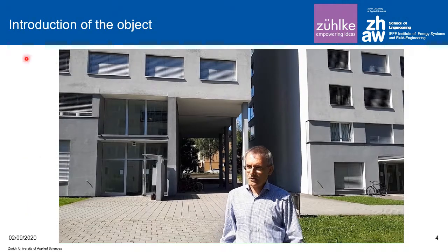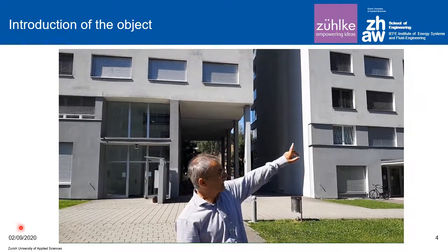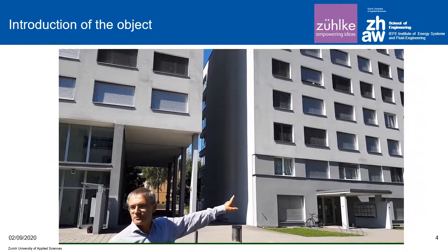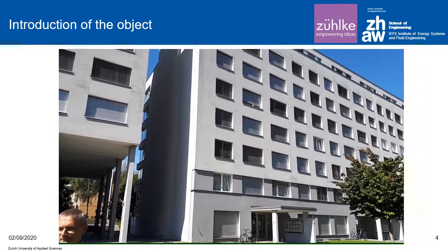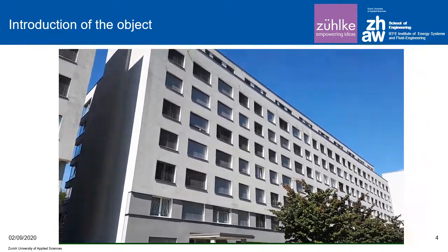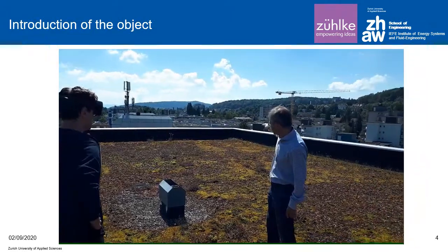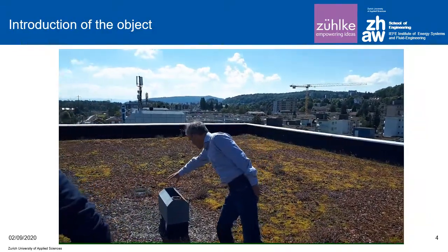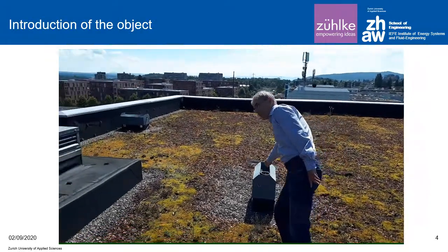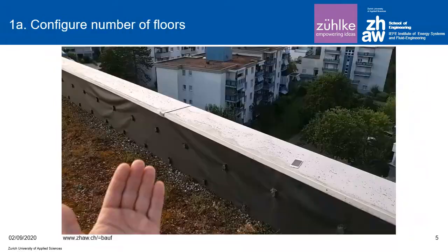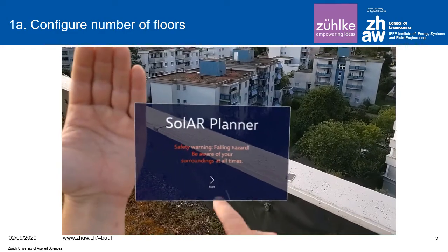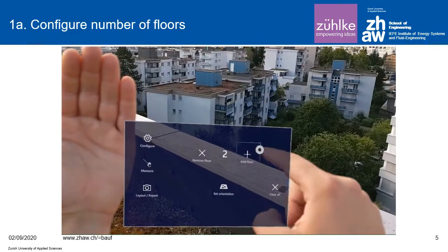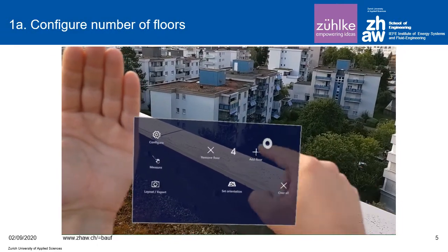We are going up to the roof to carry out the planning process for a larger PV installation, starting with evaluating the whole area and then taking care of shading objects as well. The planner chooses the number of floors by pointing to the screen of the building.